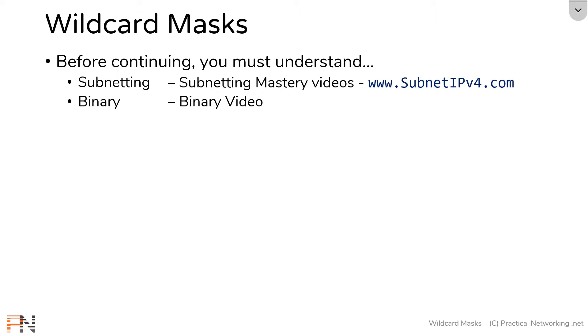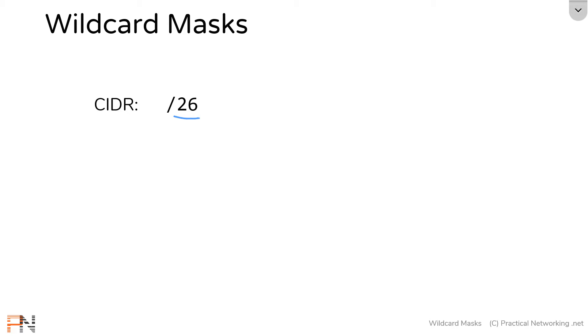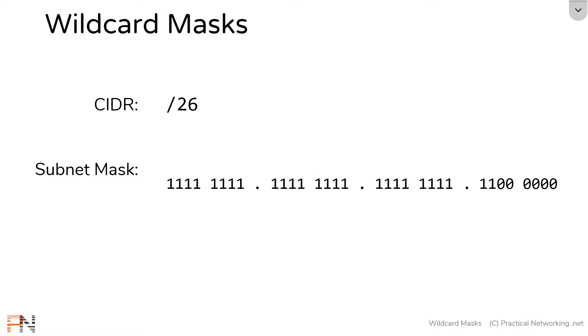A wildcard mask is very similar to a subnet mask, except that the ones and the zeros are flipped. Here is the CIDR notation of a slash 26. This 26 refers to the fact that the subnet mask in binary has 26 ones. If we convert each of those octets into decimal, we would get the correlating subnet mask for the slash 26 of 255.255.255.192.